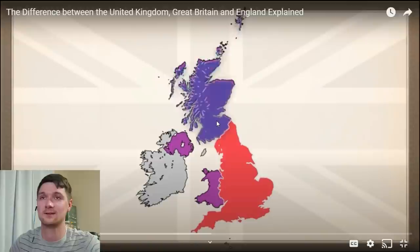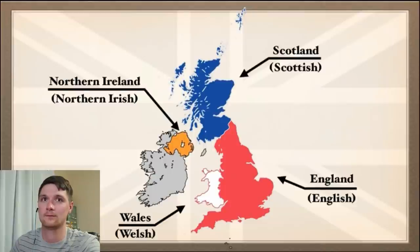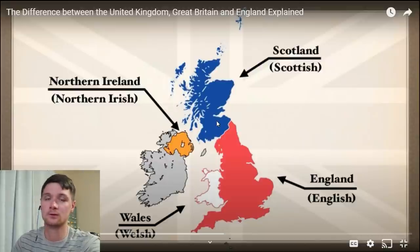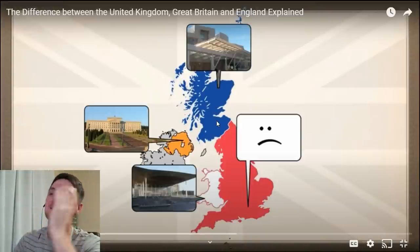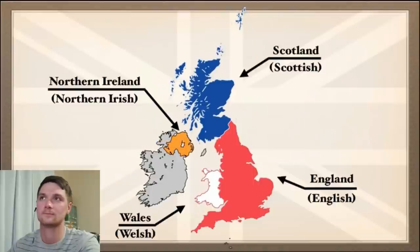To the north is Scotland, shown in blue. To the west is Wales, shown in white. And often forgotten, even by those who live in the United Kingdom, is Northern Ireland, shown in orange. Each country has a local term for its population. While you can call them all British, it's not recommended. So Northern Ireland, Scotland, England, and Wales make up the UK.